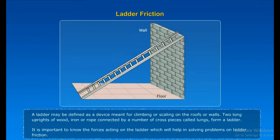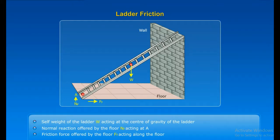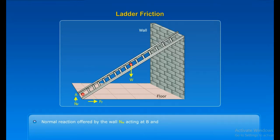Ladder friction. A ladder may be defined as a device meant for climbing or scaling roofs or walls. Two long uprights of wood, iron or rope connected by a number of cross pieces called rungs form a ladder. It is important to know the forces acting on the ladder which will help in solving problems on ladder friction. Self-weight of the ladder W acting at the centre of gravity of the ladder. Normal reaction offered by the floor NF acting at A. Friction force offered by the floor FF acting along the floor. Normal reaction offered by the wall NW acting at B. And friction force offered by the wall FW acting along the wall. This is considered negligible if the wall is smooth. In addition, the ladder is supposed to carry the weight of the person climbing it.